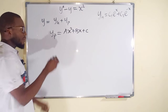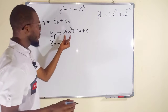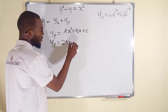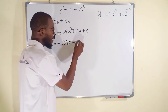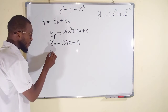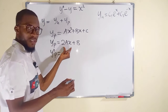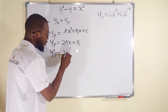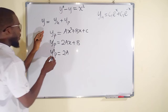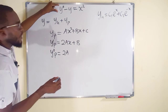Now take the first derivative: y prime of p equals 2a x plus b. The constant c becomes zero. Differentiate again for the second derivative: y double prime of p equals 2a, since 2a x differentiates to 2a and b is constant so it becomes zero. We will substitute these three results into the general equation.